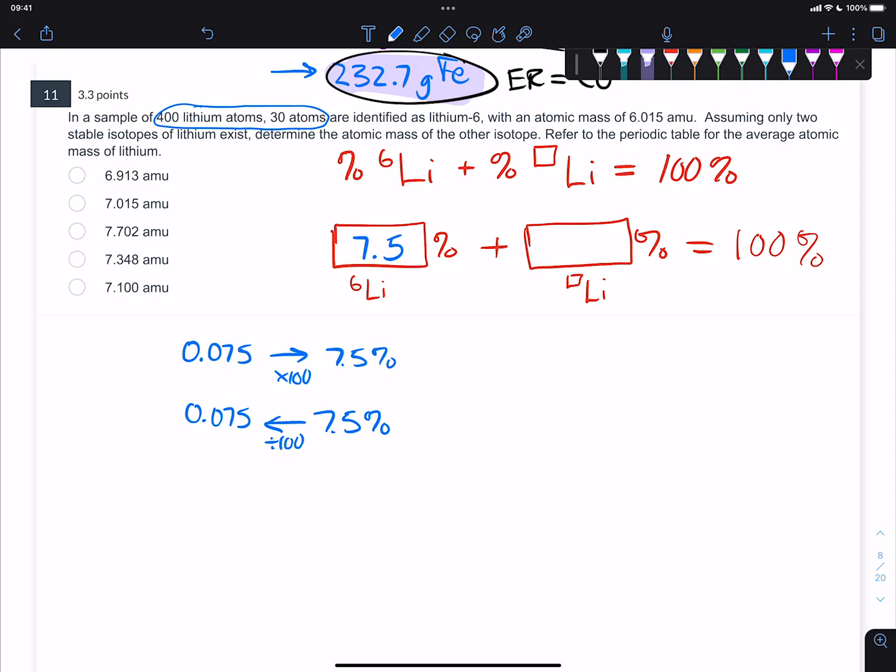Now, 7.5% of the atoms are the lithium-6 isotope. That means that the other 92.5% has to be the other lithium isotope. Now we have this information, which is helpful because we also have their masses.